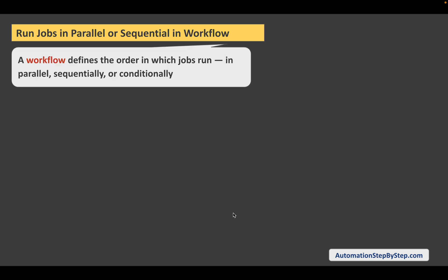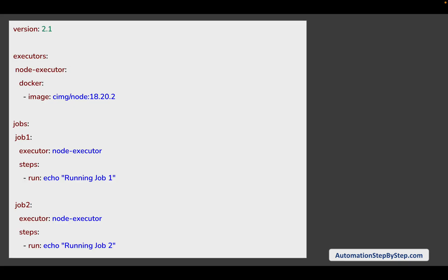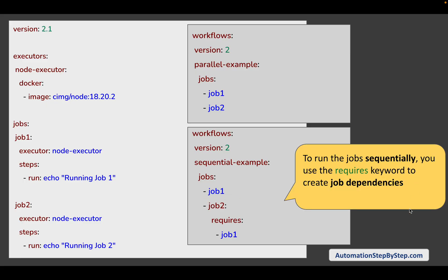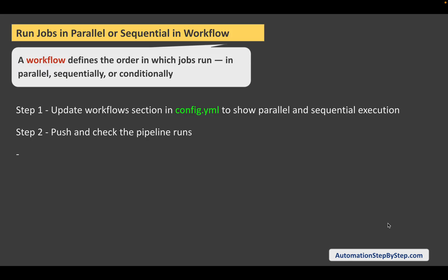If I check my GitHub repository, you can see all the changes are coming here. So this is how we can use workflows — we can use a workflow to define the order in which the jobs will run: in parallel, sequentially, or we can also have some conditions. We have already seen parallel and sequential execution — running both jobs in parallel, or sequentially using the 'requires' keyword so that job 2 depends on job 1.